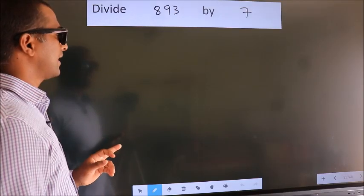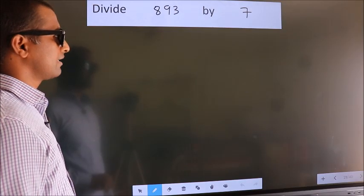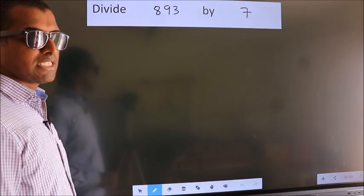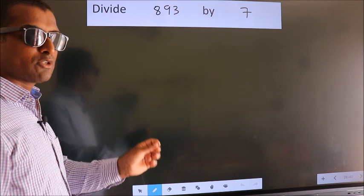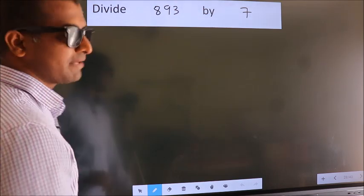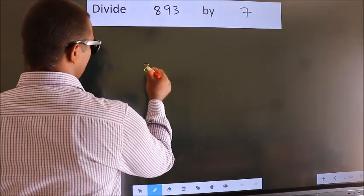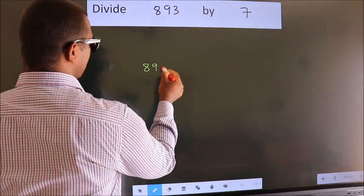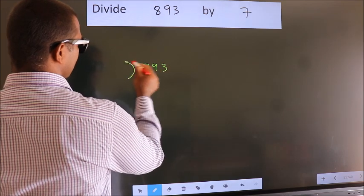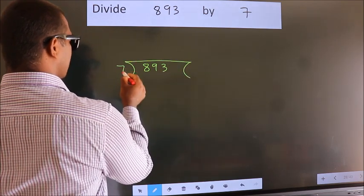Divide 893 by 7. To do this division, we should frame it in this way: 893 here, 7 here.